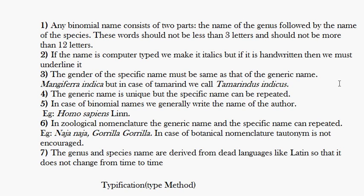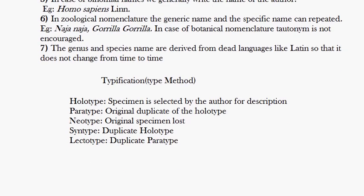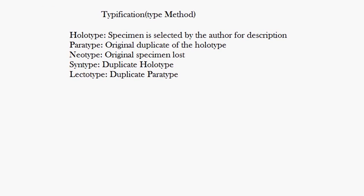The next topic is typification. Whenever an author discovers a new species, he or she describes it using either a photo, a herbarium sheet, or a drawing. That original specimen or drawing the author used to describe the species is called the holotype.